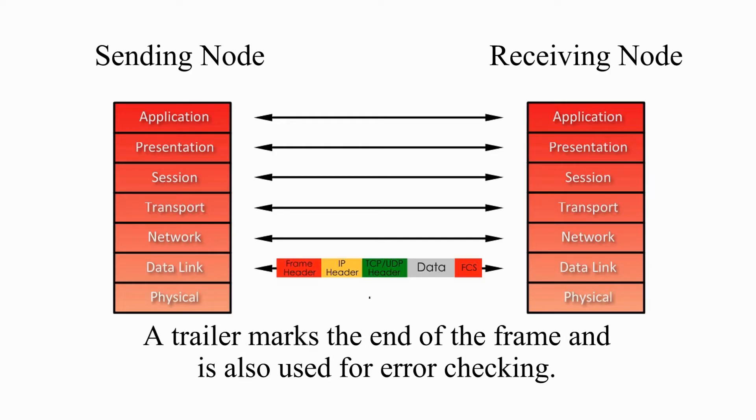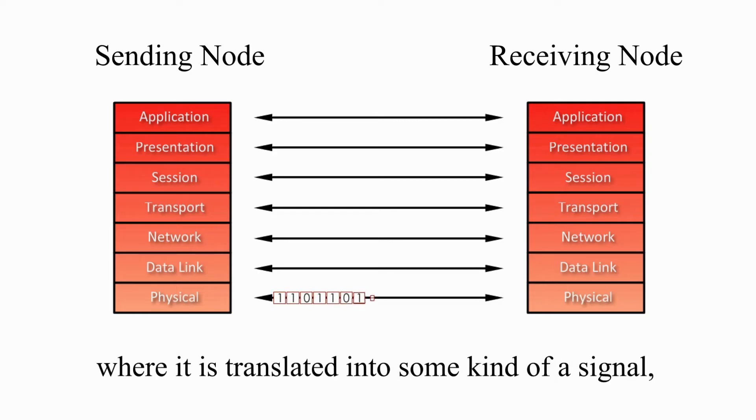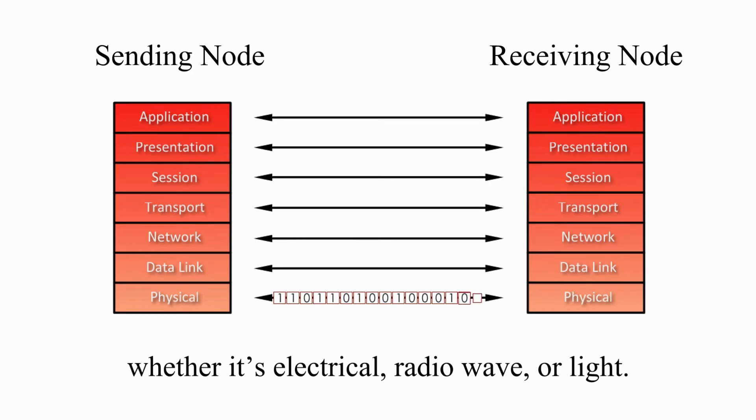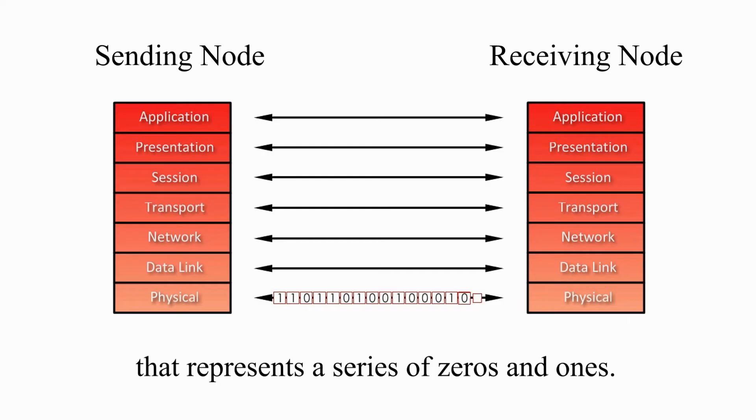A trailer marks the end of frame, and is also used for error checking. The frame then is sent to the physical layer, where it is translated into some kind of signal, whether it is electrical, radio wave, or light. This frame then becomes some kind of signal that represents a series of zeros and ones.